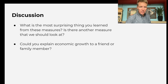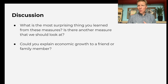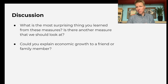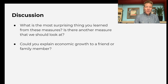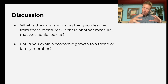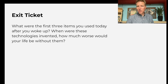You want to ask your students to have a discussion: What is the most surprising thing they learned? Is there another measure we should look at? We're using economic growth, life expectancy, happiness — is there something else we should be looking at? People can have different opinions: maybe we should look at the shape of the distribution, how equal it is, or think more about pollution. And then ask them to explain economic growth to a friend or family member — trying to get them to put it in their own words, a little bit of metacognition.